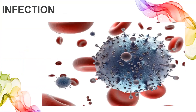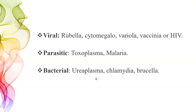Now let's talk about the infection part. These can be a cause of late or early abortion. Transplacental fetal infections occur and because of that, fetal loss will result. Infections can be viral — like rubella, cytomegalovirus, variola virus, vaccinia virus, or even HIV. Parasites include toxoplasma and malaria. Bacterial infections include ureaplasma, chlamydia, and brucella. Importantly, spirochetes hardly cause abortion before the 20th week, because of the effective thickness of the placental barrier.